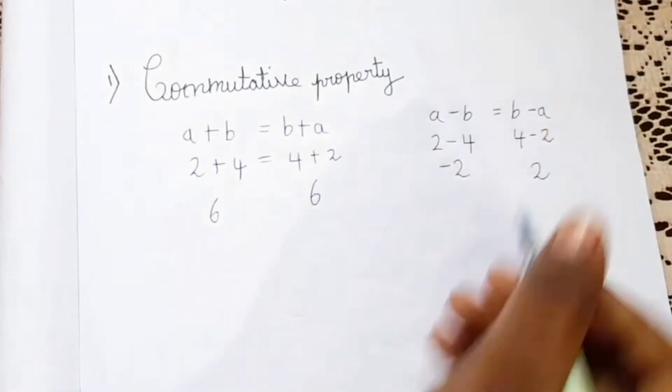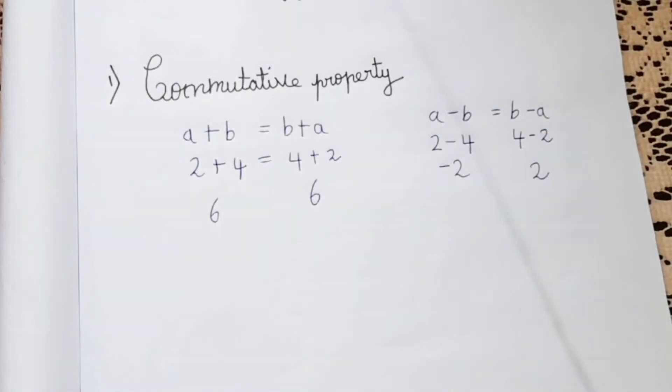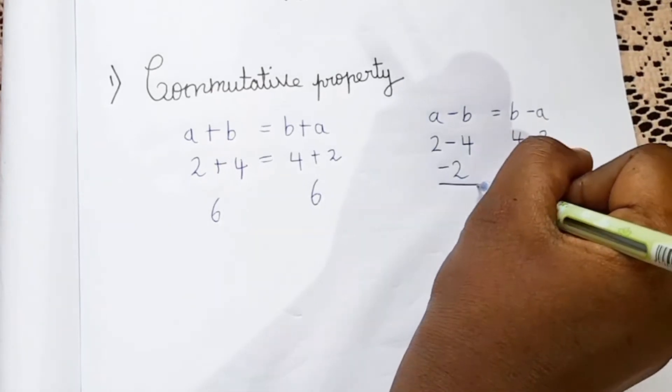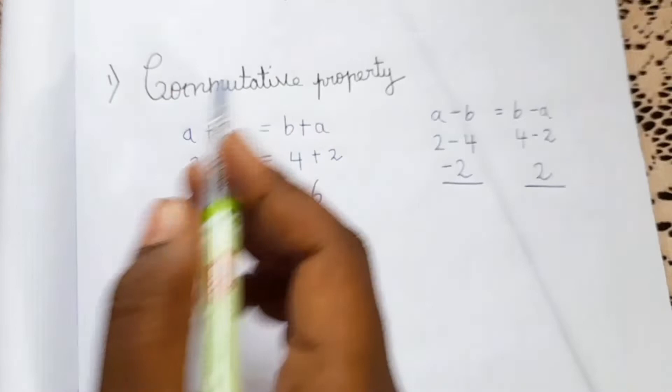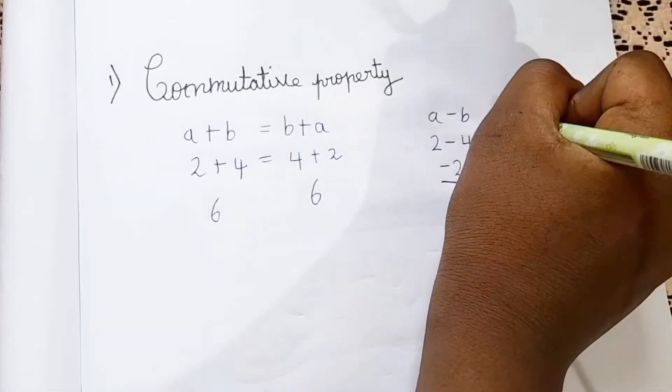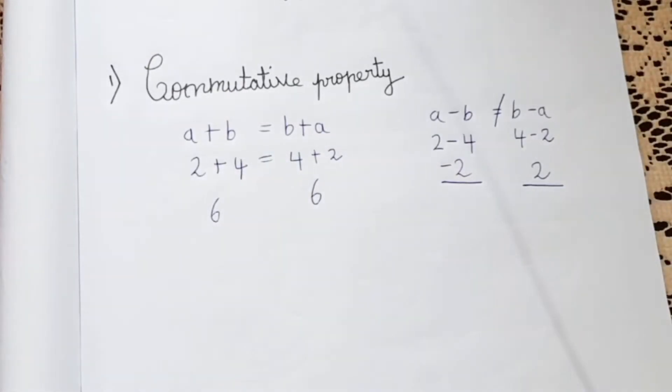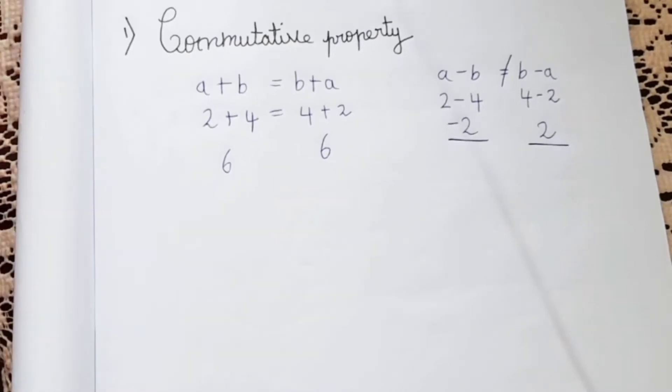So here why did I get the minus symbol? Because here you guys can see the greatest number is 4 and 4 is having the subtraction symbol, that's why I wrote minus 2. Which means we are not getting the same answer here. We got minus 2 and here we got 2. So in commutative property subtraction is not there.